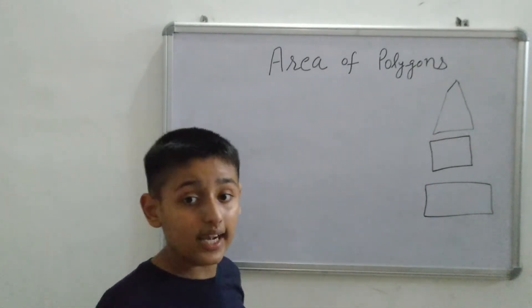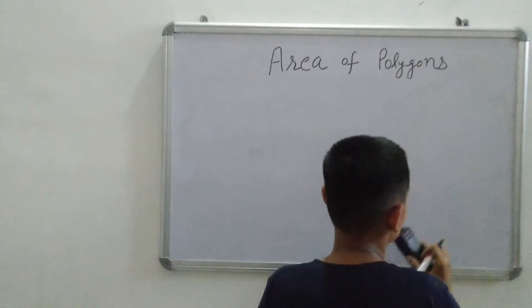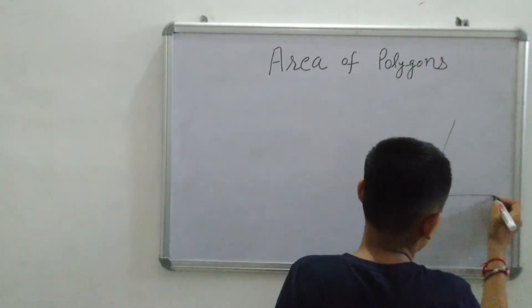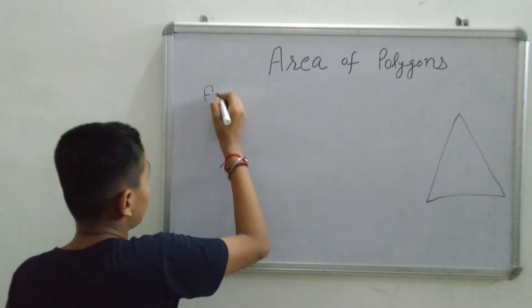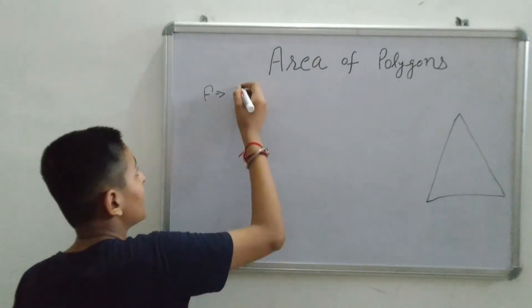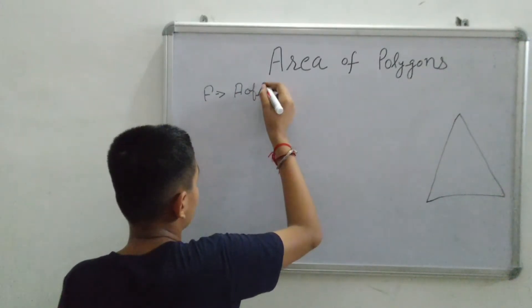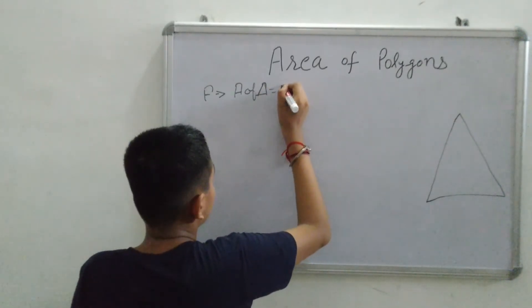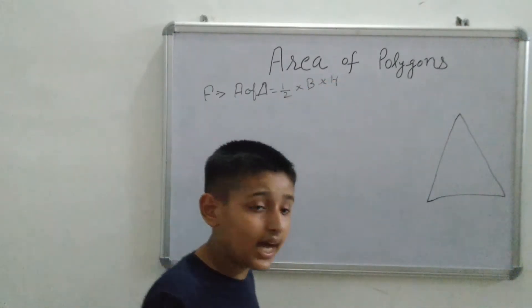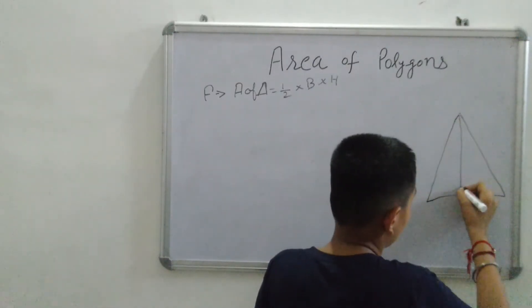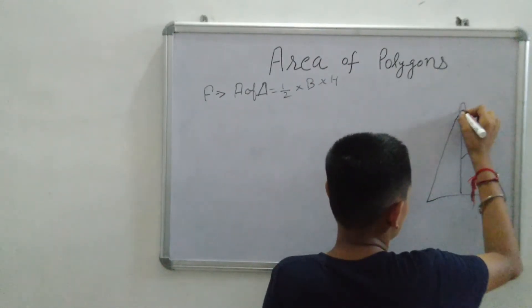First we are taking triangle — how to calculate the area of a triangle. Suppose this is our triangle. The formula of a triangle is: area of a triangle equals one by two multiplied by base multiplied by height.